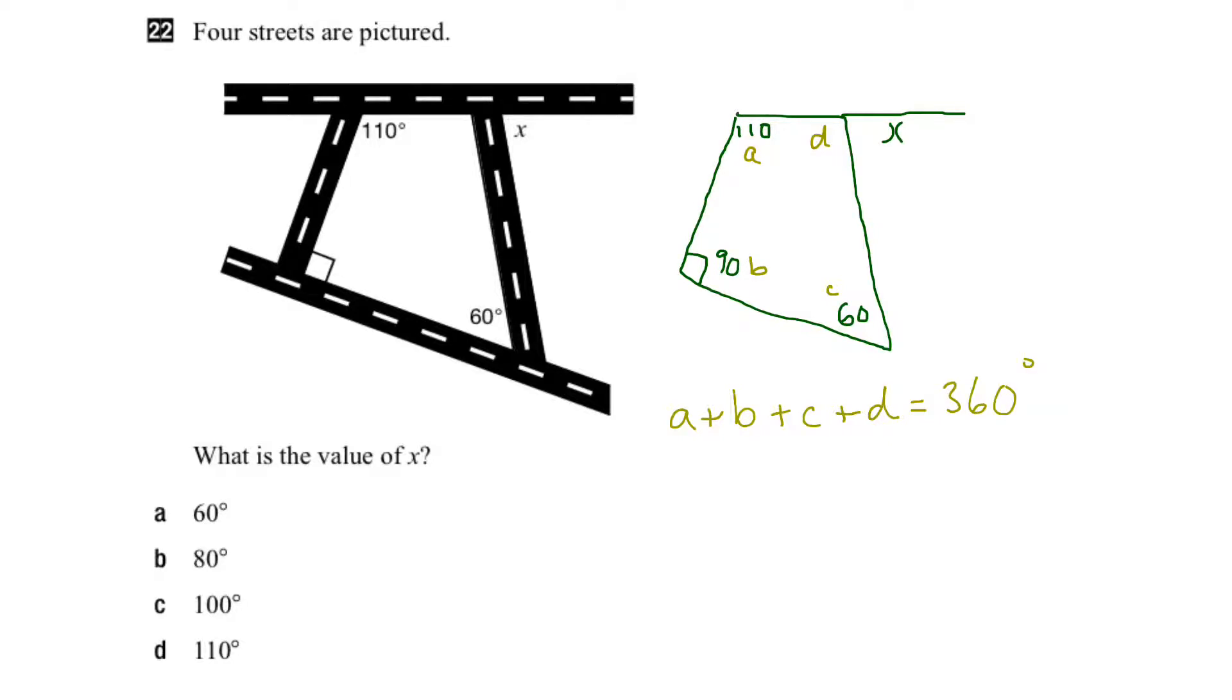Now, if you weren't sure about that, what you can do is actually draw in a diagonal here, and that would break it up into two triangles. And we know that the sum of the interior angles of a triangle add up to 180 degrees. So if I have two triangles, then 180 plus 180 on this side would add up to 360.